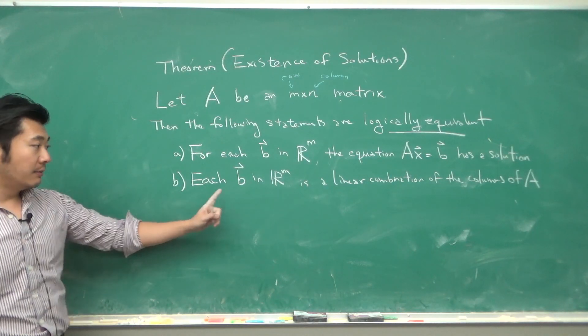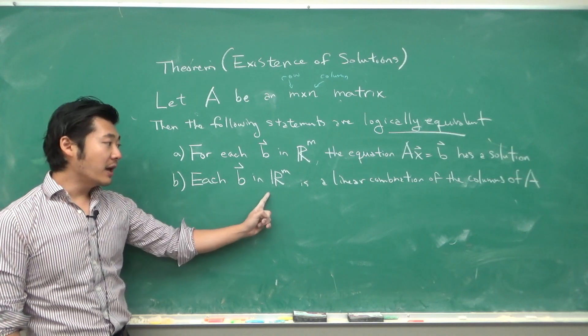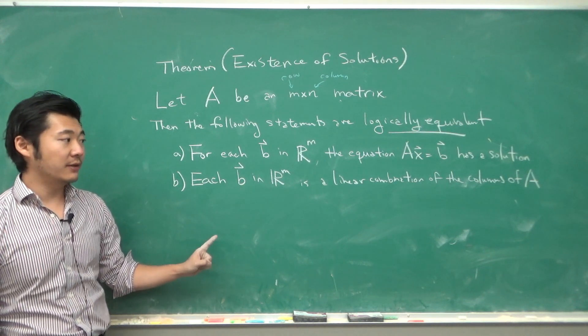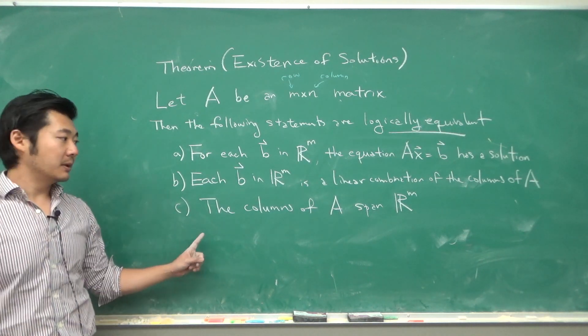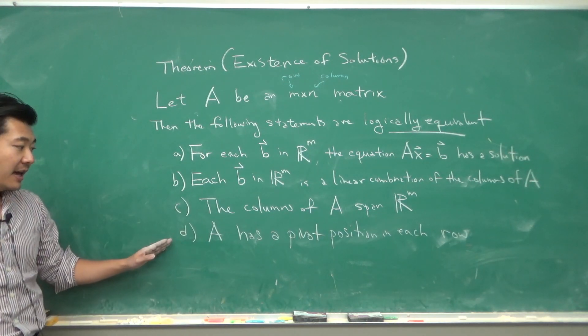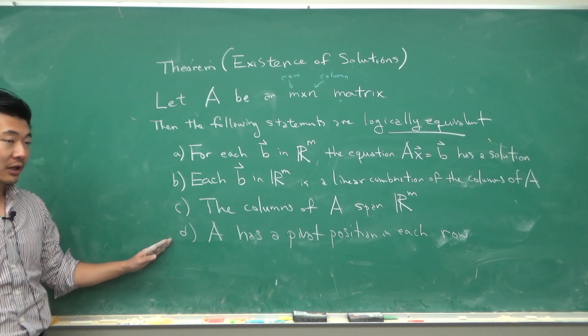Statement B: each vector B in R^m is a linear combination of the columns of A. Statement C: the columns of A span R^m. And statement D: A has a pivot position in each row.